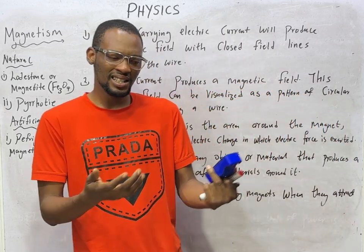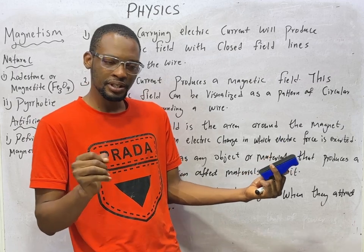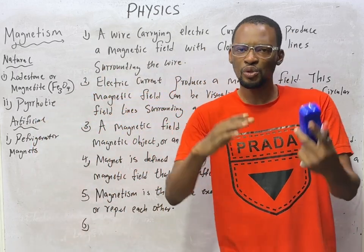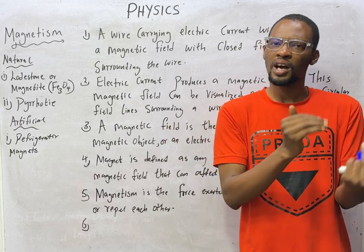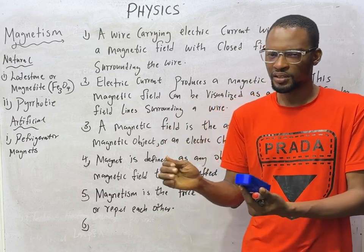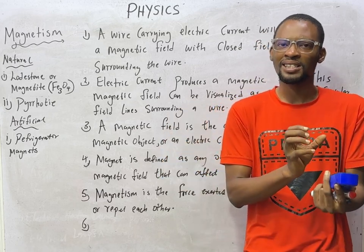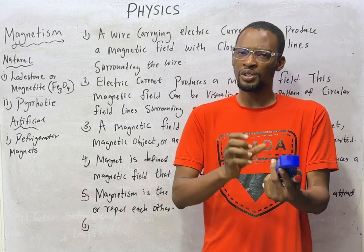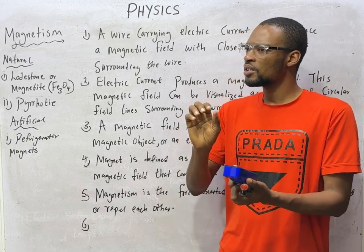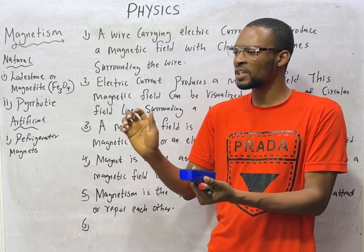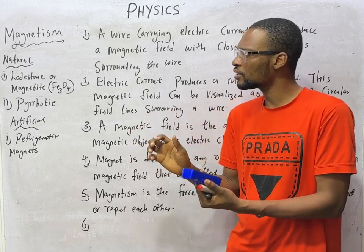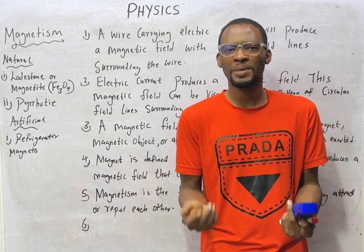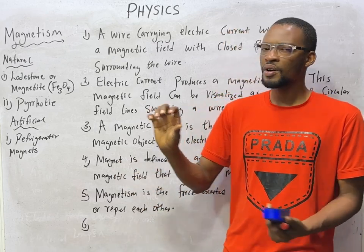Artificial magnets are obviously man-made. These artificial magnets can be divided into two: temporary and permanent magnets. Temporary magnets can only retain their magnetism for a short while. Meanwhile, permanent magnets can retain magnetism for a very long period of time. A good example of artificial magnets is the refrigerator magnet.